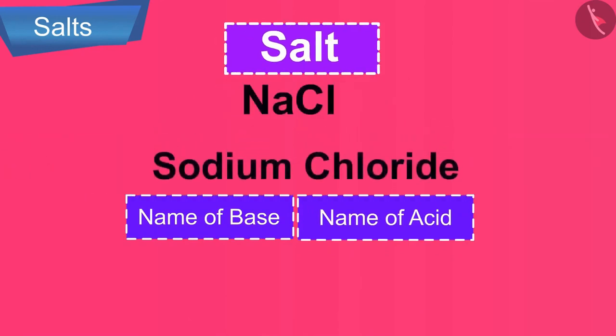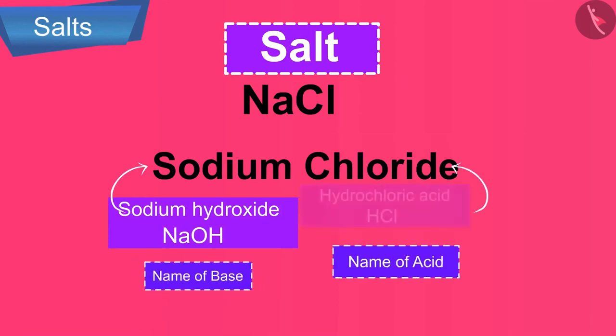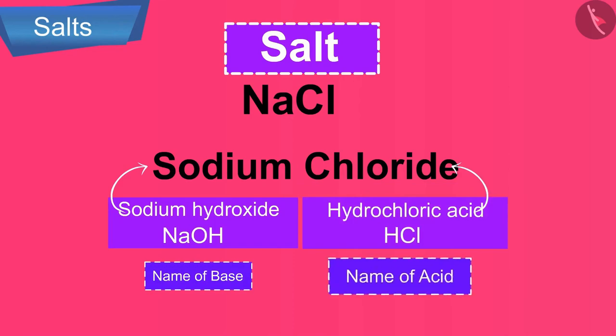For example, the name of a salt, sodium chloride: sodium comes from sodium hydroxide, which is a base, and chloride comes from hydrochloric acid, which is acid.